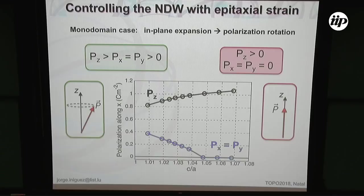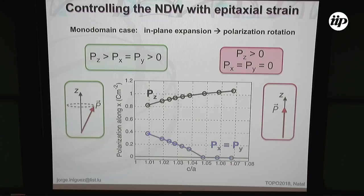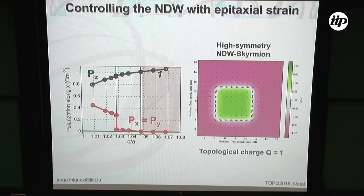We thought: let's do this to our nanodomain wall — to our skyrmium. In the monodomain case, you see how this polarization component goes up very quickly at a certain value of the in-plane lattice constant. Now I do the same thing but in the presence of the skyrmium. Over here it is more or less the same, and I have a skyrmium with topological charge equal one up to this regime.